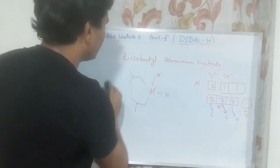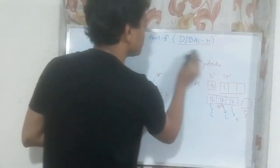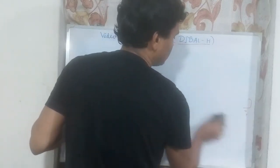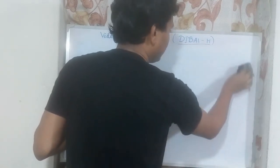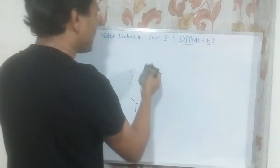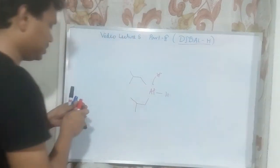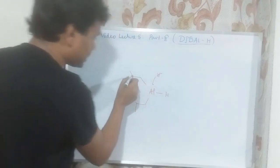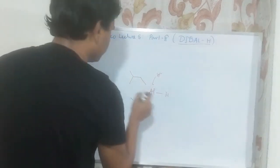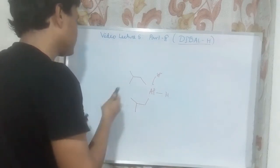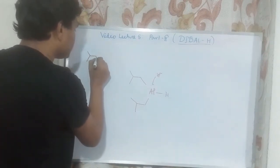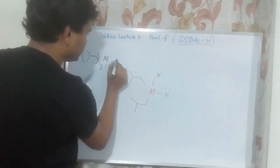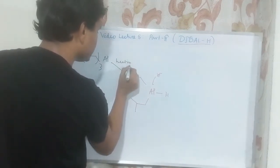Right now we will discuss its preparation. Unlike other aluminum hydrides like lithium aluminum hydride, DIBAL-H is prepared from trialkyl aluminum — specifically tri-secondary-butyl aluminum. This tri-secondary-butyl aluminum reagent upon heating produces this reagent.